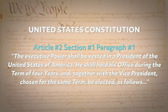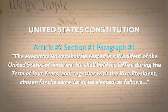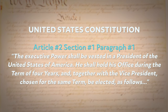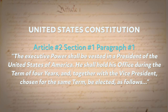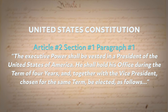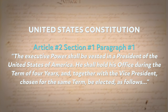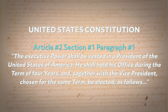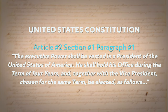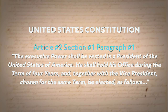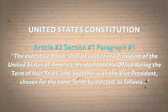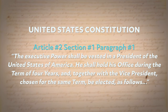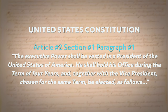Article 2 begins with: 'The executive power shall be vested in a president of the United States of America. He shall hold his office during the term of four years, and together with the vice president, chosen for the same term, be elected as follows.'